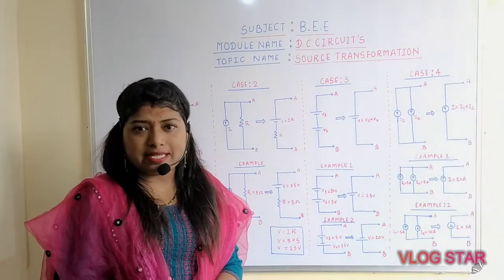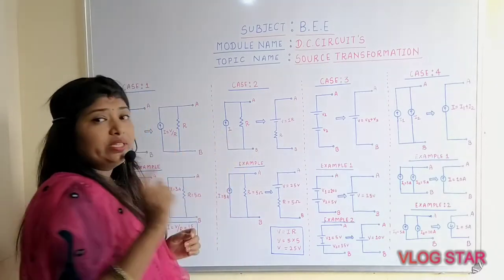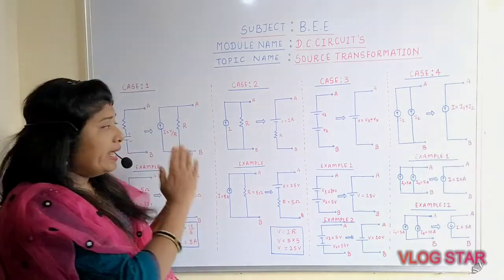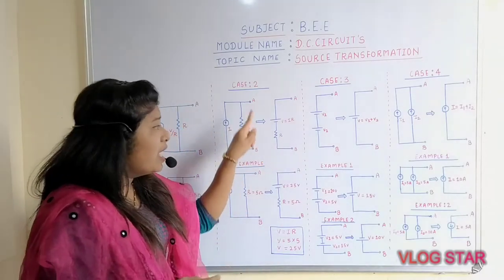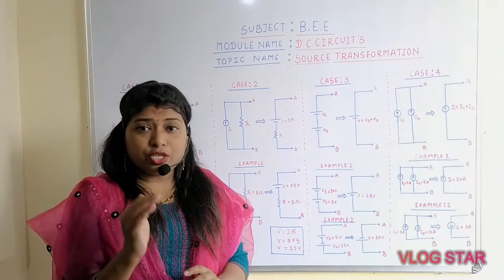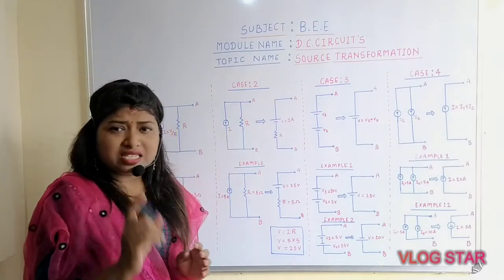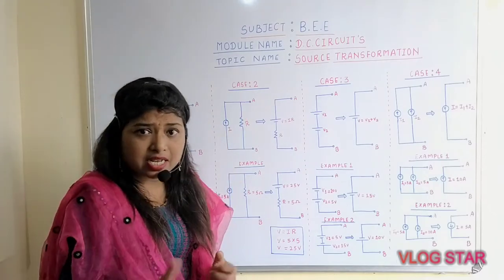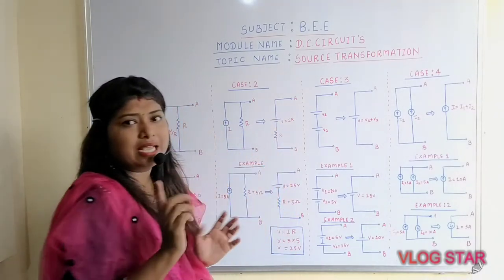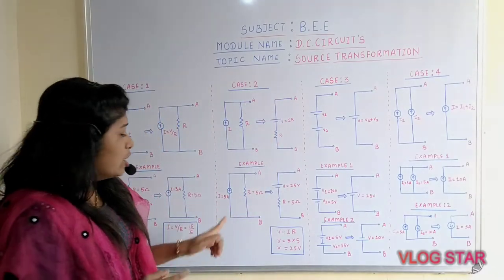Coming to case number two, which is exactly the converse of case number one. If the current source is parallel with the resistance, it can be converted into a single voltage source in series with the same resistor. Remember case number two: current source parallel with resistance converts to voltage source in series with the same resistance.